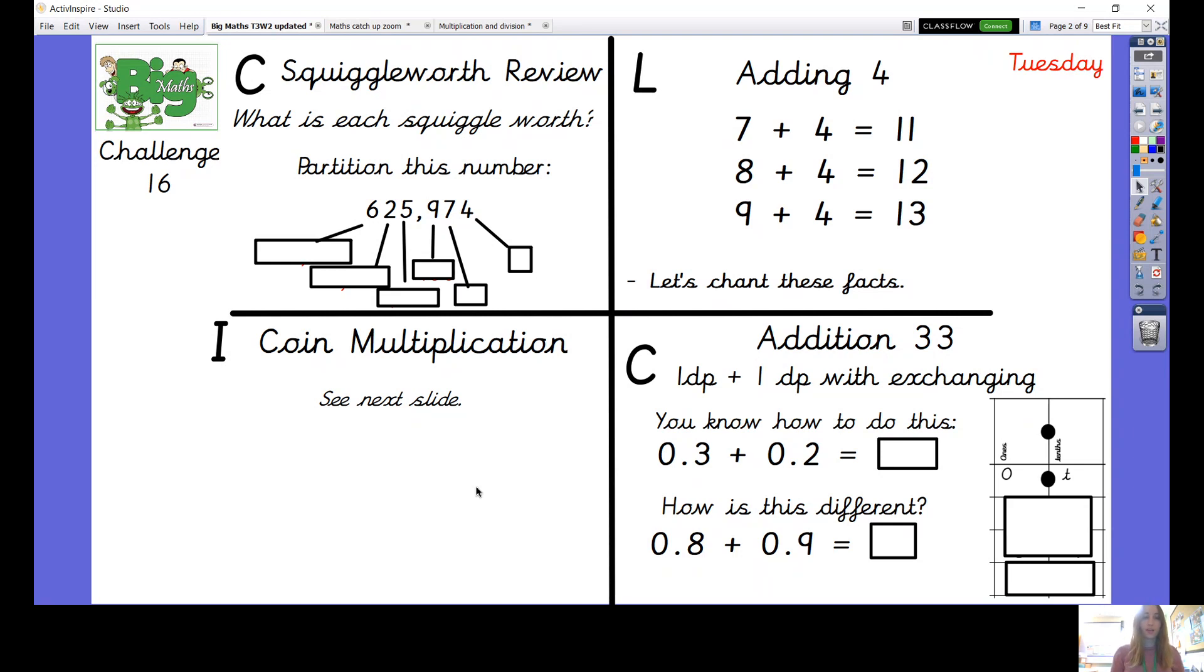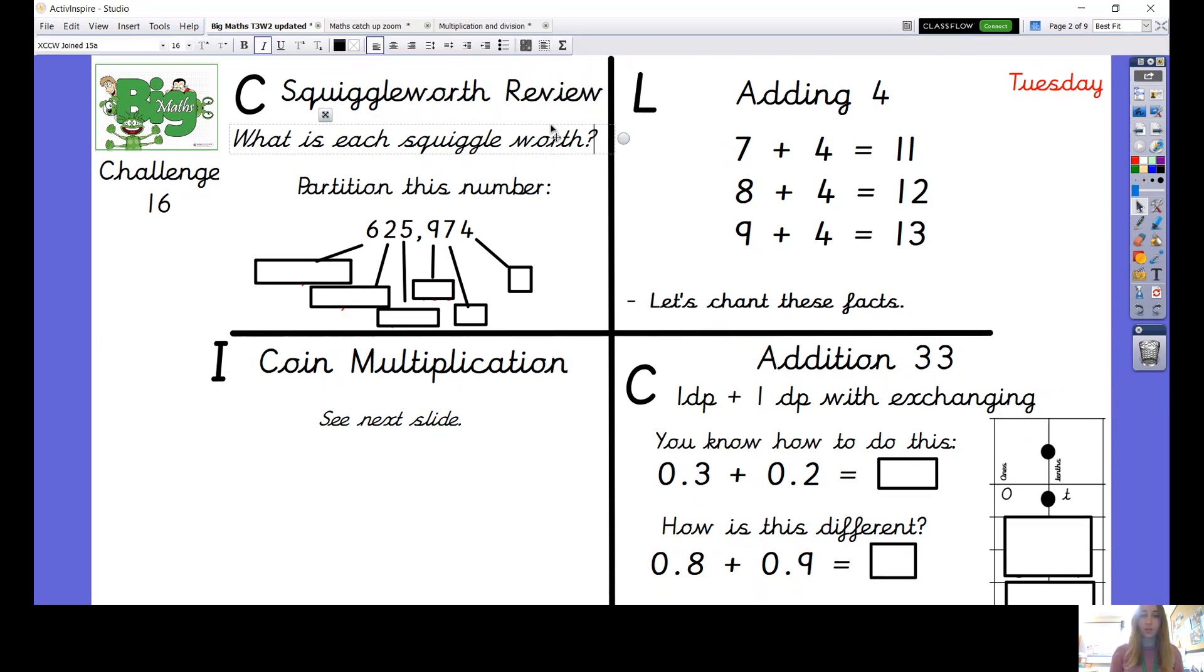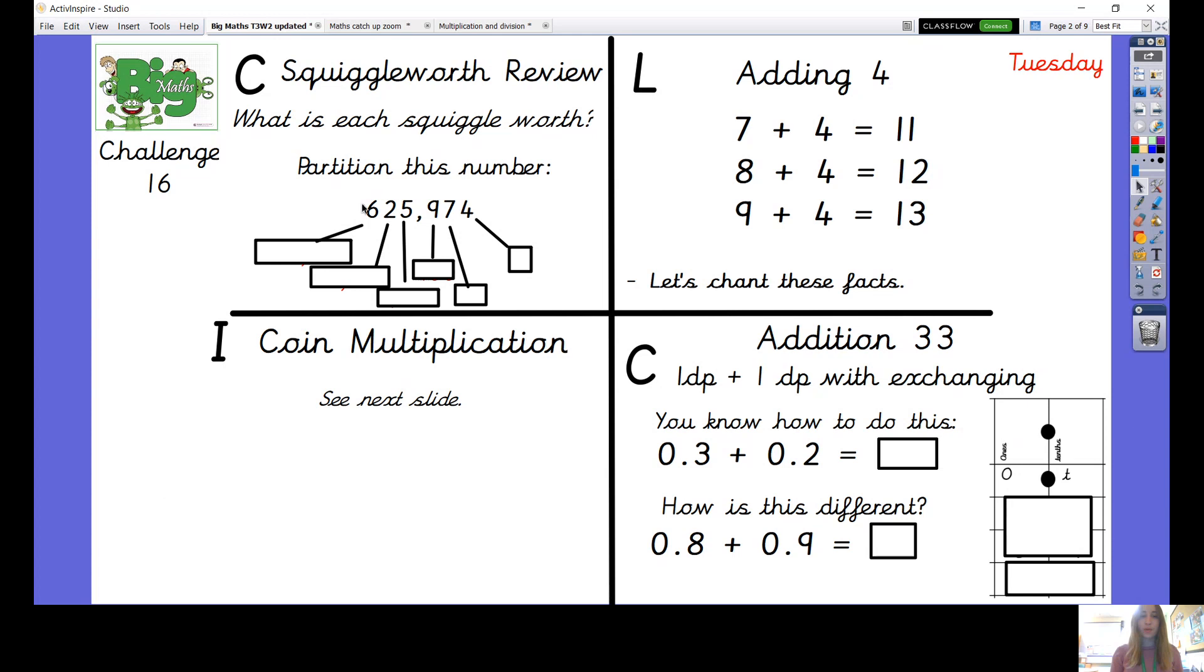We're going to start off with our counting skills and this week we're looking at squiggleworth, and we ask that question: what is each squiggle worth? So here is my number and I'm thinking each of these squiggles on the page or digits as we sometimes call them, what does it represent in that number? So this two doesn't actually stand for two in this number, two ones, but it actually stands for something else.